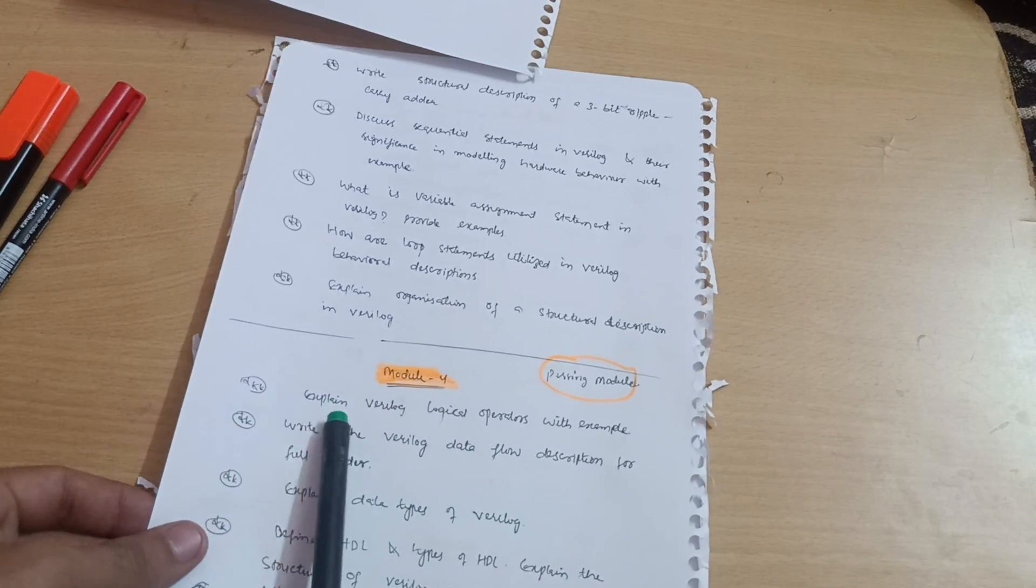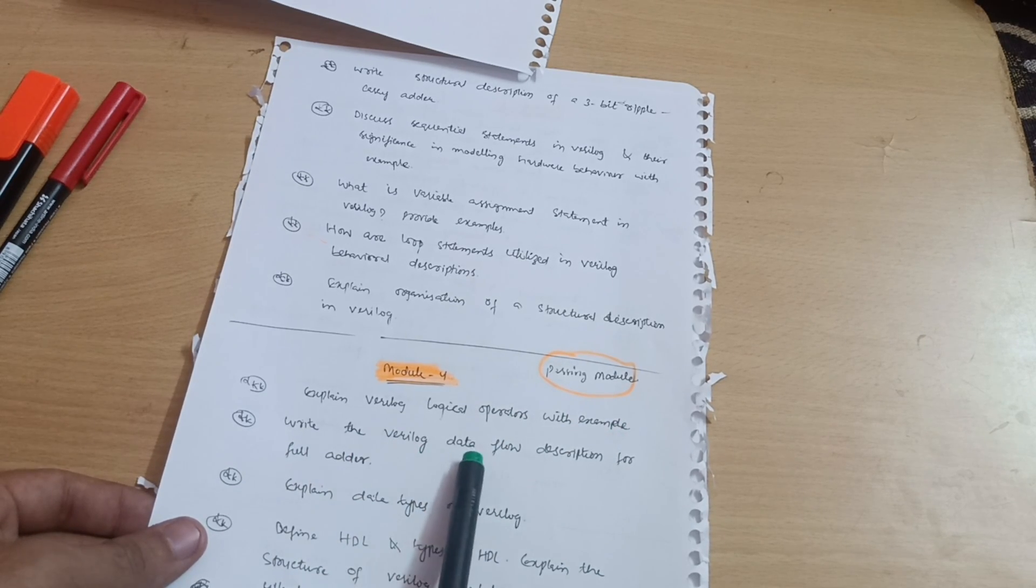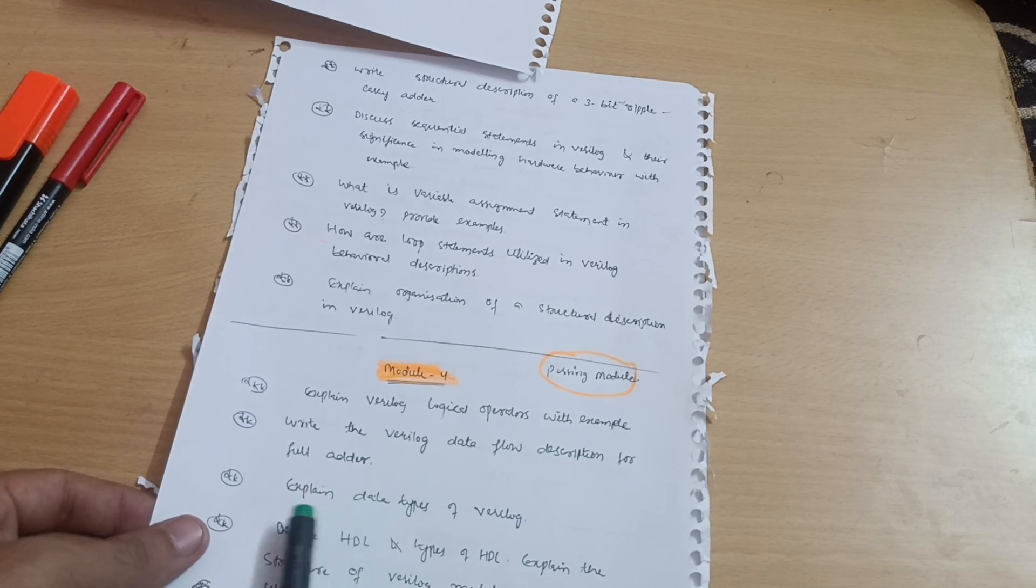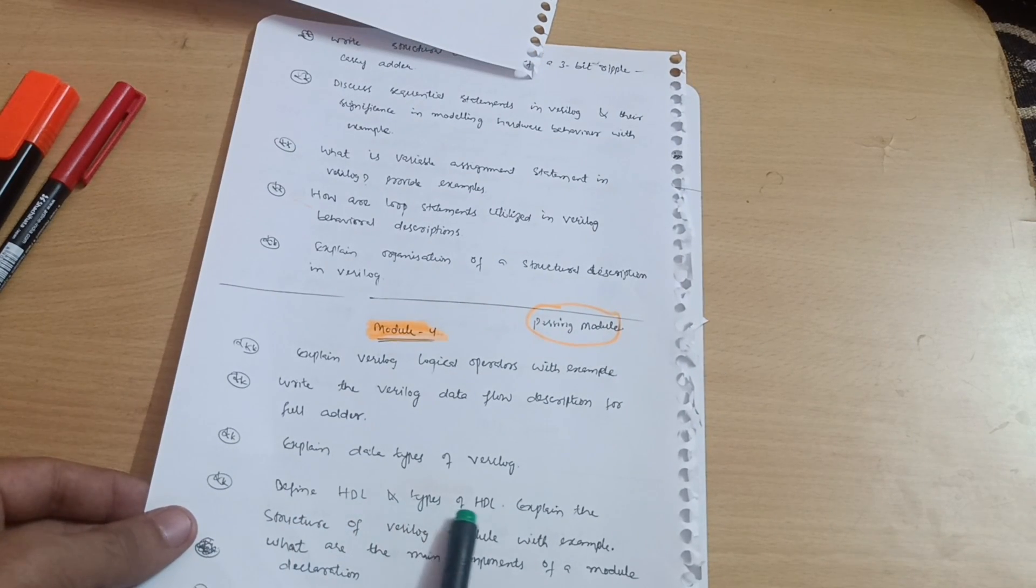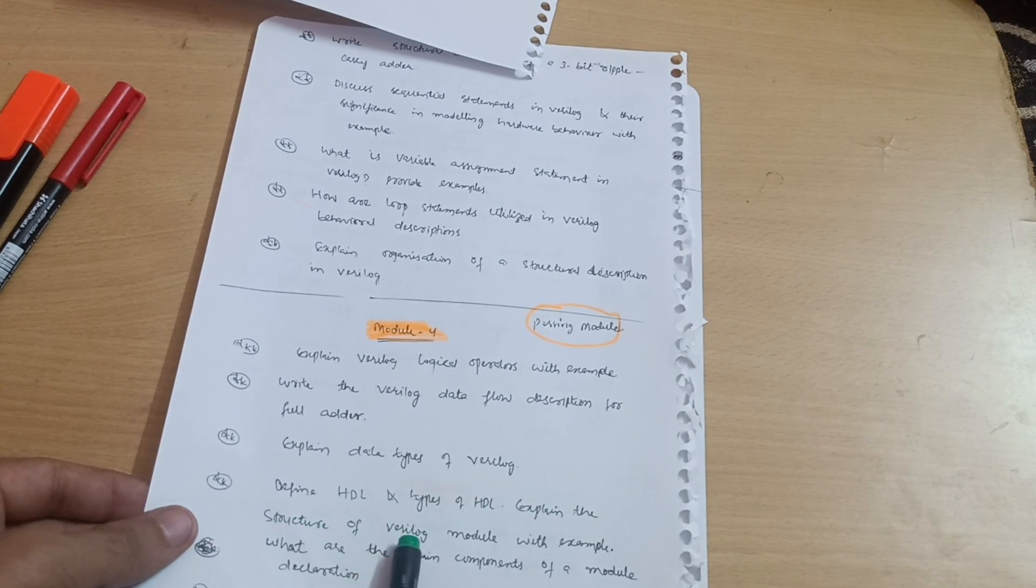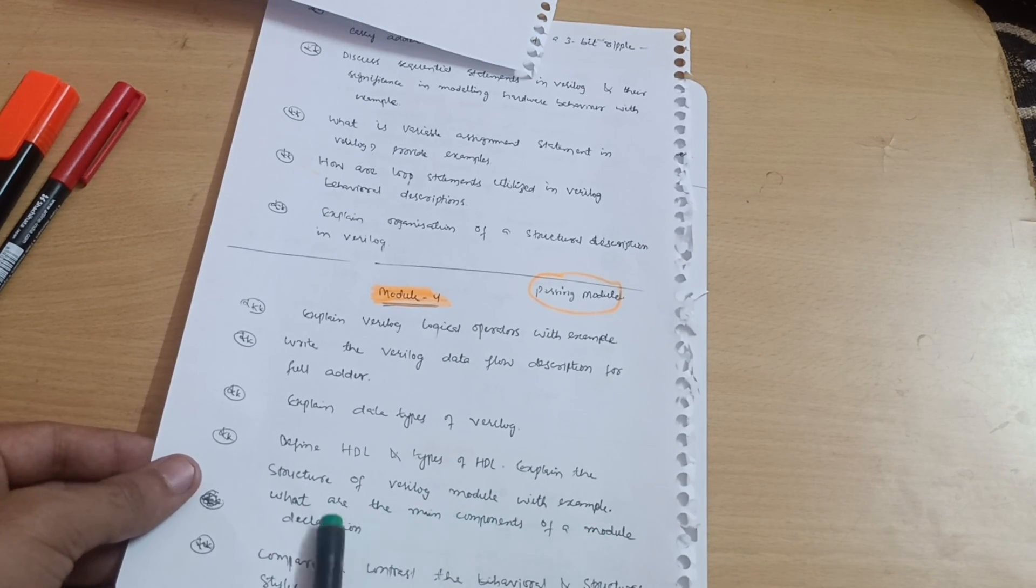Now let's move to another passing module which is module four. Explain Verilog logical operators with example. Write the Verilog dataflow description for full adder. Explain data types of Verilog. Define HDL and types of HDL. Explain the structure of a Verilog module with example. What are the main components of a module declaration?